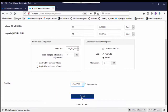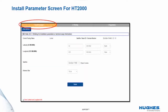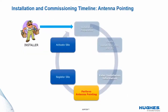The terminal will enter the pointing mode. Here is the installation parameter screen for HT2000 — it is much simpler than HT2300 and does not require loading an ODU file. The SBC file and longitude/latitude are required for all terminal types. Now let's check the installation and commissioning timeline again. After we enter the installation parameters and click the Submit button, the terminal will be put into the antenna pointing mode.